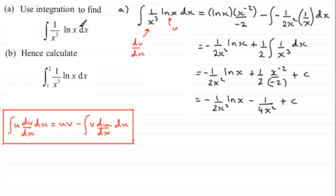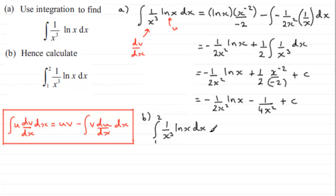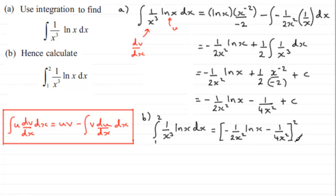That's the integral of 1 over x cubed times the natural log of x with respect to x for part a. Moving on to part b, we need to evaluate the same integral between the limits x equals 1 and x equals 2. We use the result from part a — no constant c needed — giving us minus 1 over 2x squared times the natural log of x, minus 1 over 4x squared, evaluated between 1 and 2.